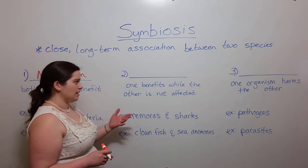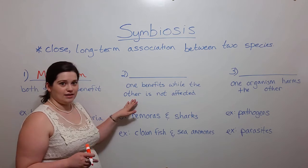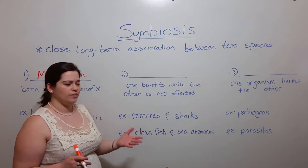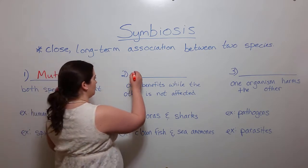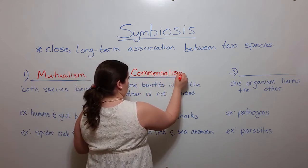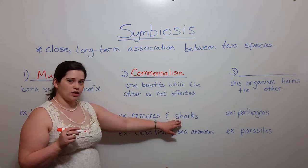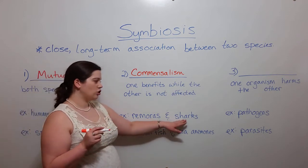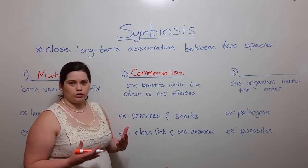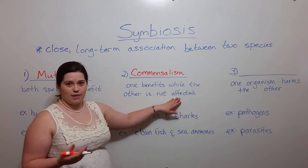Another type of symbiosis is where one species benefits while the other is not affected — that is, the second species in the association is neither helped nor harmed. This is called commensalism. An example of commensalism is remoras, which are a type of fish, and sharks. The remoras will actually attach to sharks and thus gain a way of locomotion — a way of movement or transport. The sharks, on the other hand, are not affected by the presence of the remoras.